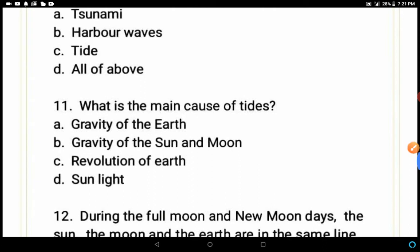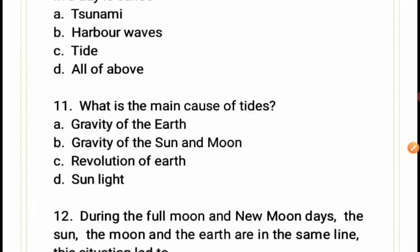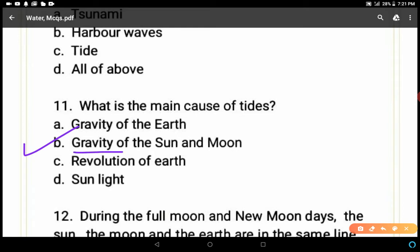Question 11: What is the main cause of tides — gravity of the earth, gravity of the sun and moon, revolution of the earth, or sunlight? The gravity of the sun and moon is the correct answer, because due to their gravitational forces, water on the earth comes up and goes down twice a day.